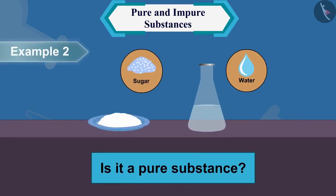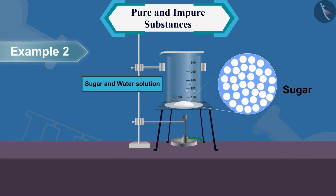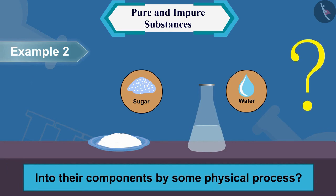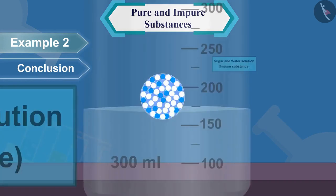Let us now look at the sugar and water solution. Is it a pure substance? Let us find the answer through an activity. In a beaker, take the sugar and water solution and heat it with the help of a burner. What do you see? The sugar that was dissolved in water is separated from the water due to evaporation.